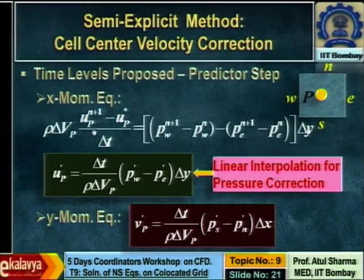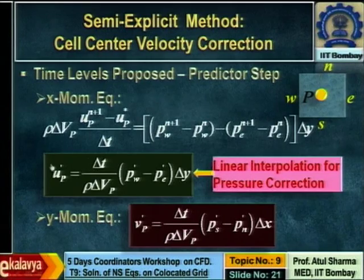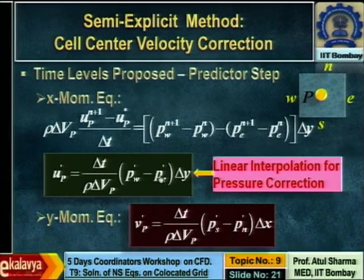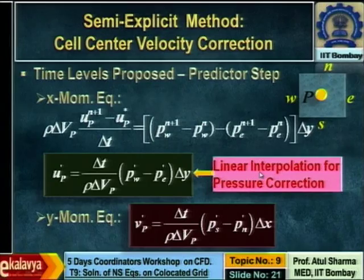The procedure is: we have the original proposition equation, the prediction equation, and by subtracting the two we get the correction equation. For velocity correction at cell centres, we subtract the predicted from the original proposition and get an equation for velocity correction as a function of pressure correction. Note that for velocity correction at cell centres, the pressure corrections at the face centres are calculated by linear interpolation.